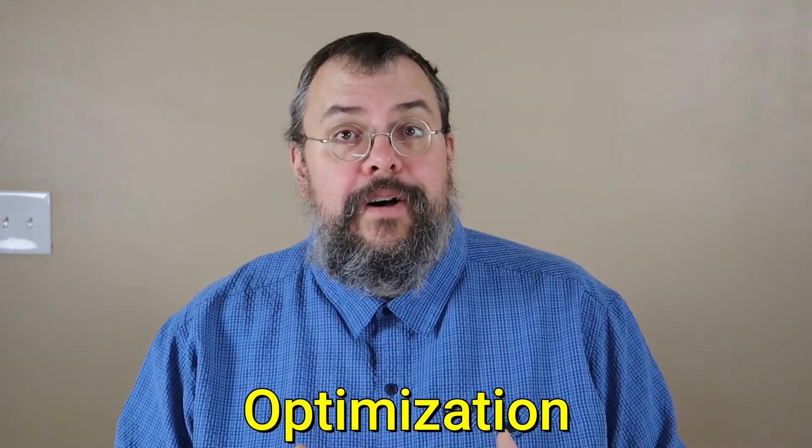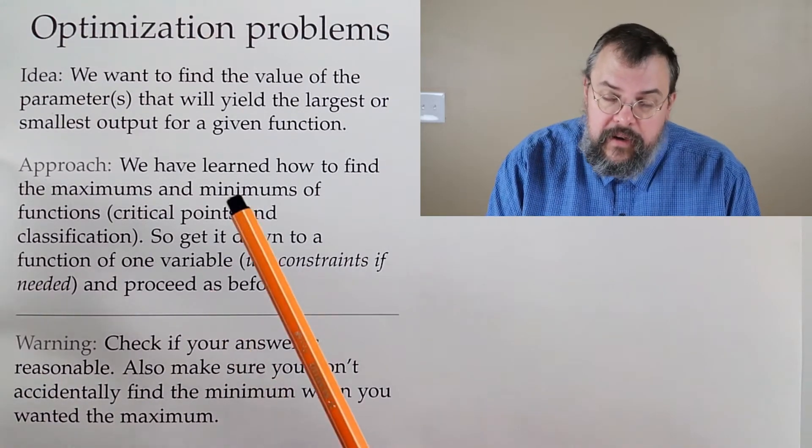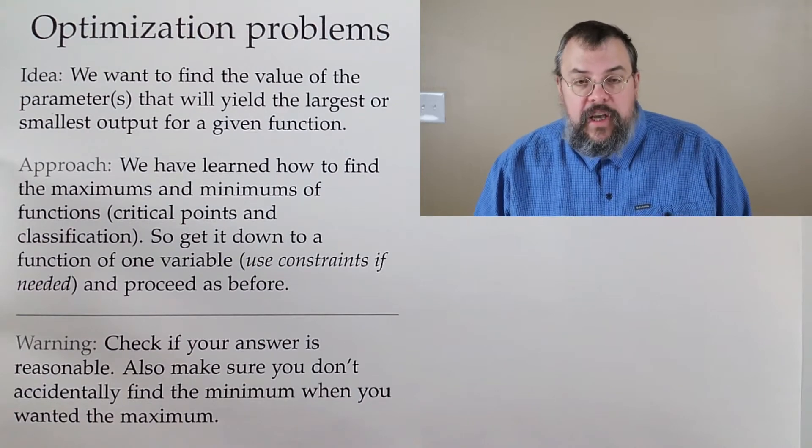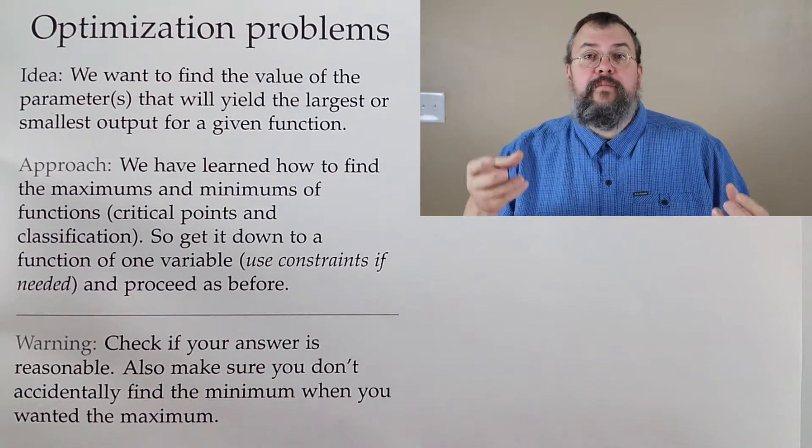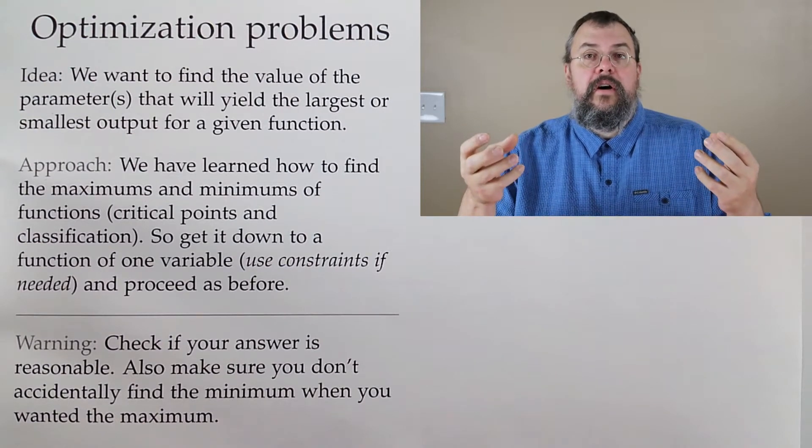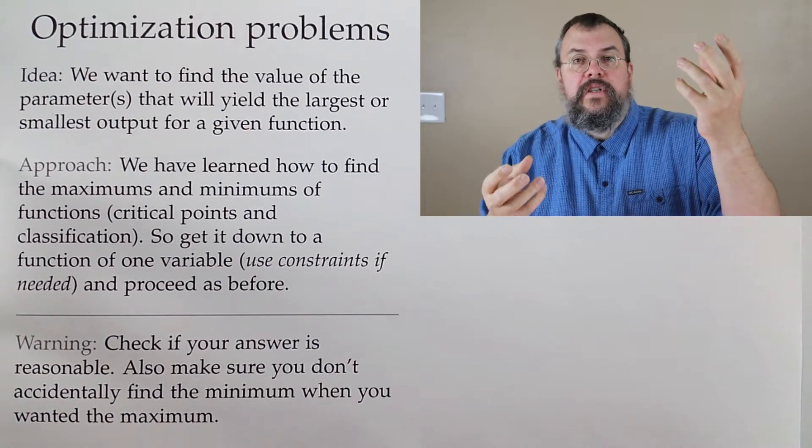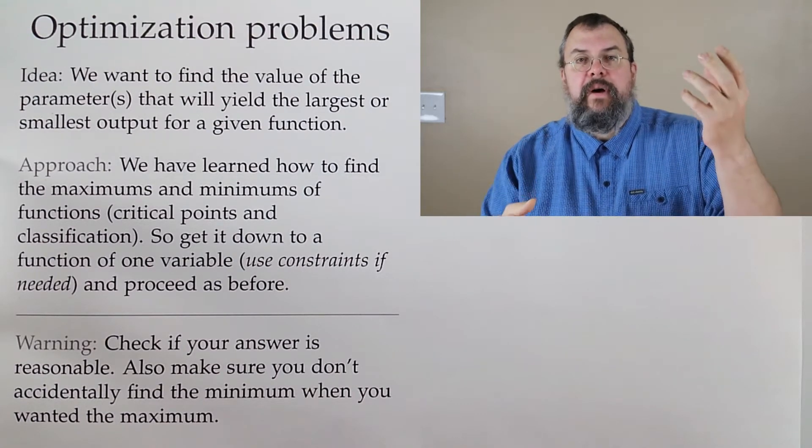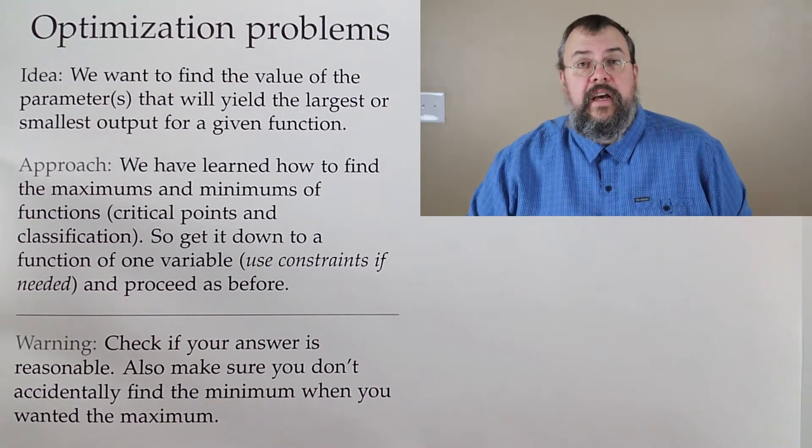Our idea is we want to find some value that produces the best option. Optimization says we're trying to produce the desired result and we have competing interests. As we put more of this element into play, it worsens the effect over here and vice versa. So it's about finding that balance, that trade-off where we have the best net outcome.